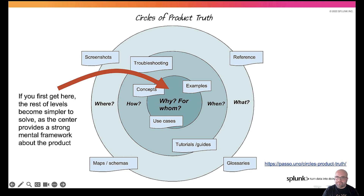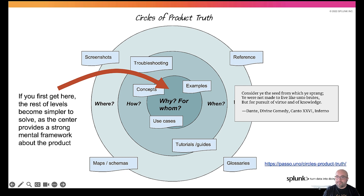The moral of the story is that technical writers cannot realize the full potential of documentation without getting to the center. Those who are already there, like founders or product managers, might know all about the why, but might miss the truth that is living in the outermost ring — they might not be concerned with things like the reference docs. Engineers might know a lot about the how and when, but perhaps they're missing the connection with the other two rings. Technical writing is a bit like Dante, in the sense that we cross all the circles of product truth — it's not hell, of course, it's product truth — and we try to connect them.